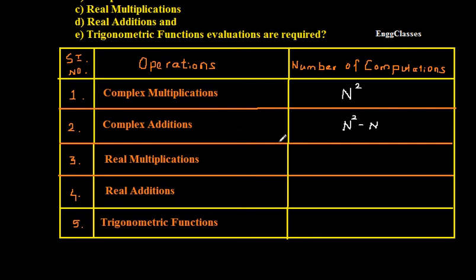What about real multiplications? In finding DFT of any sequence, there are 4N² real multiplications involved.